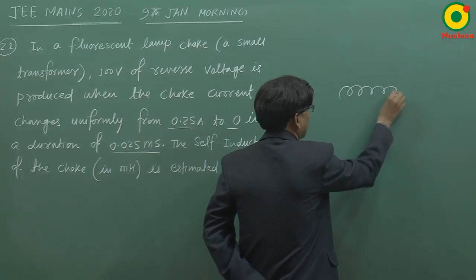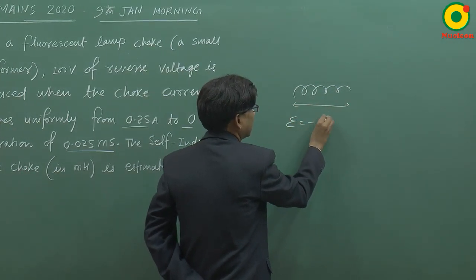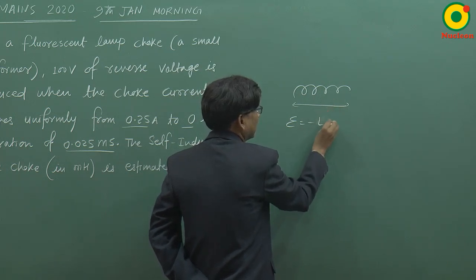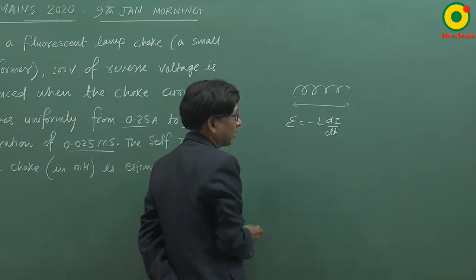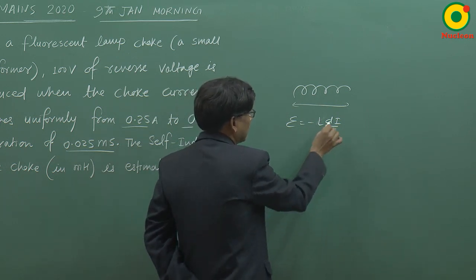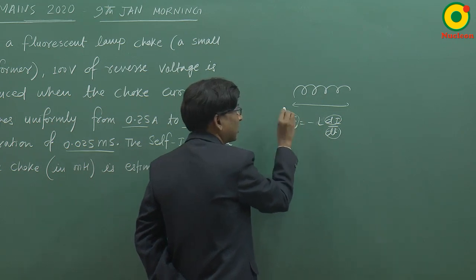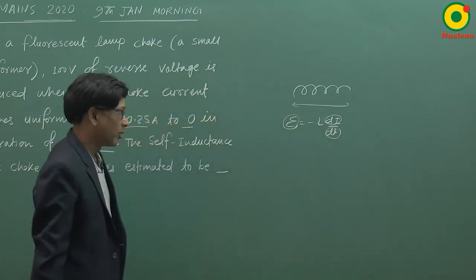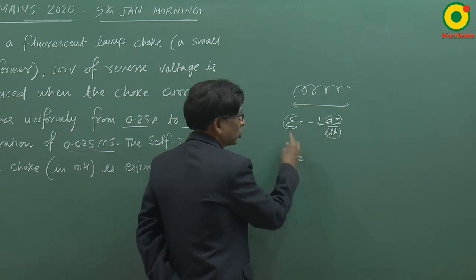choke coil में reverse EMF induce होता है, जिसको लोग माइनस L di by dt कहते हैं। यह reverse EMF कहलाता है। इसमें change in current भी दिया गया है, time interval भी दिया गया है, और जो voltage induce हुआ वो भी बताया गया है। inductance का value निकालने के लिए कहा गया है।